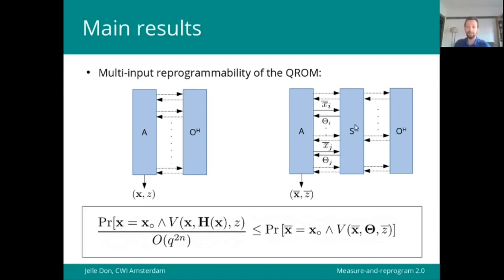then there exists a simulator that can sort of creep in between the adversary and the oracle, and choose n of the adversary's queries at random, measure them, and on the input that it finds, in this example n is 2 and the simulator finds xi and xj, it can then reprogram the oracle to fresh random values theta i and theta j,